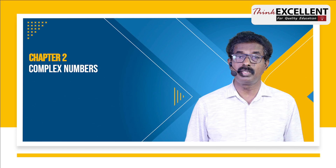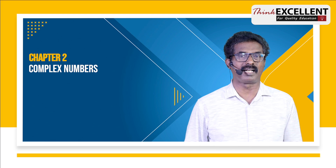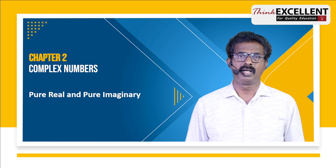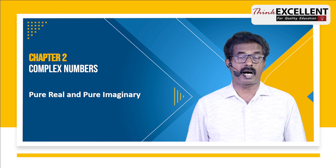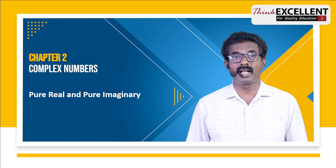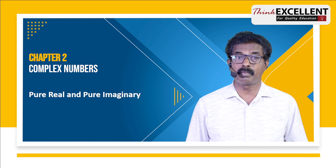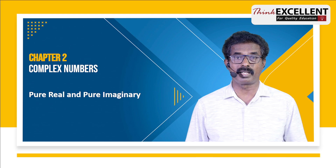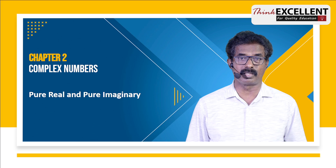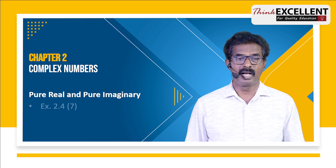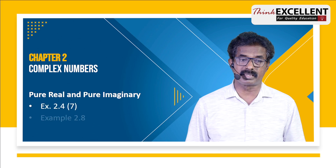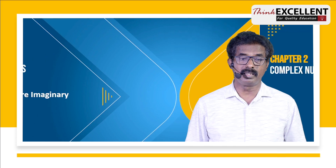Chapter number 2: Complex Numbers. Very easy, with a small number of high-mark questions. First, prove that a complex number raised to some power is pure real or pure imaginary. Pure real means Z-bar equals Z; pure imaginary means Z-bar equals minus Z. That is based on exercise 2.4, question number 7, and example 2.8.